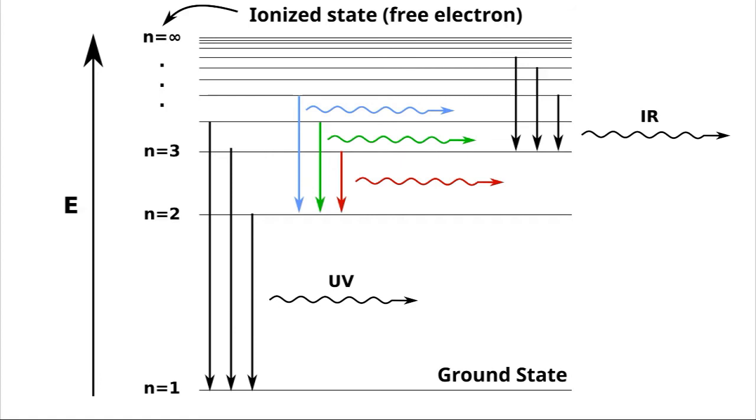So, in the case of our transitions down to n equals 1, these are very high energy. You can see these are large jumps here. And so, these fall in the ultraviolet region of the electromagnetic spectrum where we have high energy light. And those you can't see.